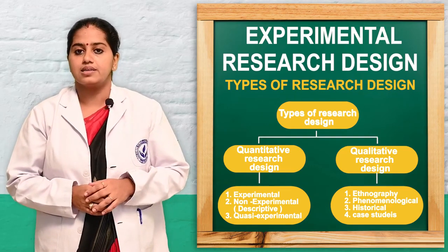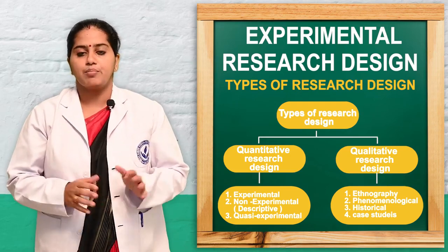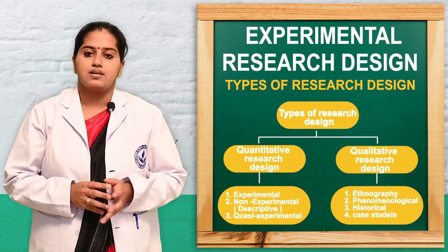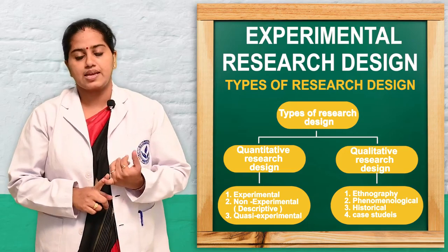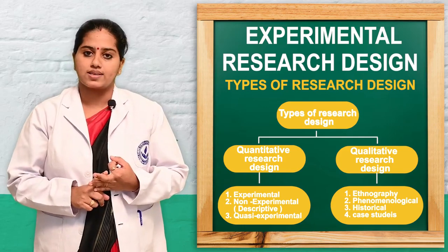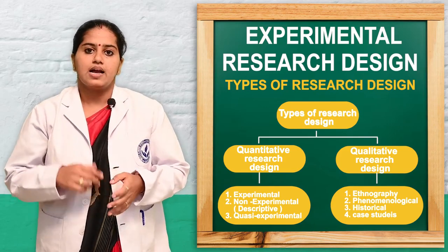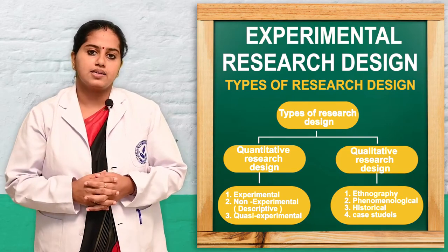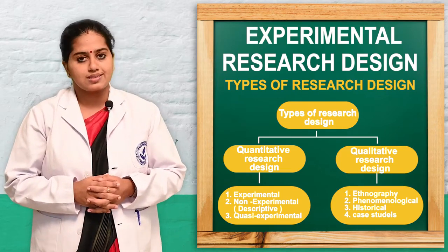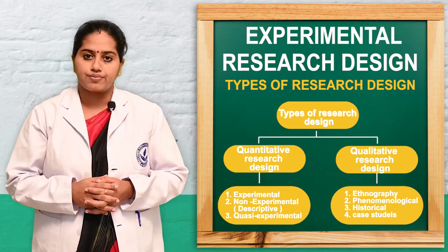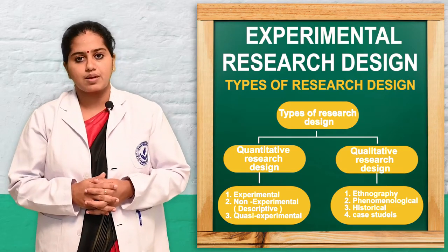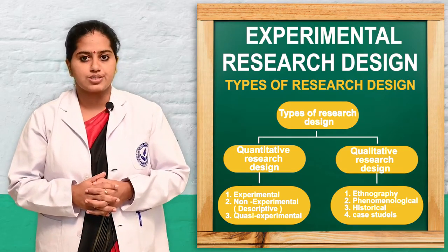Quantitative research design is mainly divided into three: experimental research design, descriptive research design, and quasi-experimental research design. Qualitative research design mainly includes phenomenological research design, ethnographic, case studies, and historical — these are some types of qualitative research design.